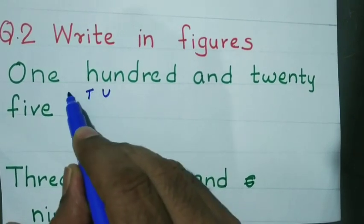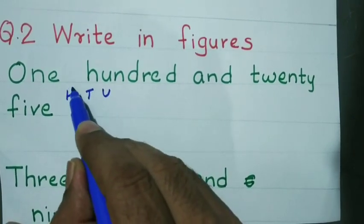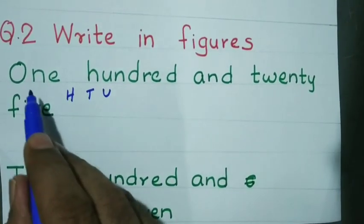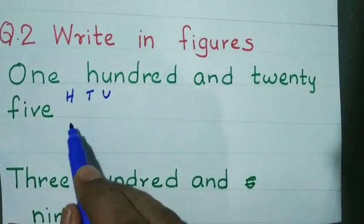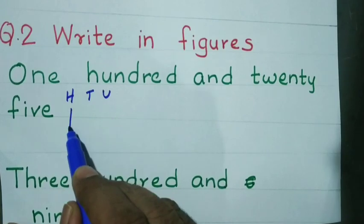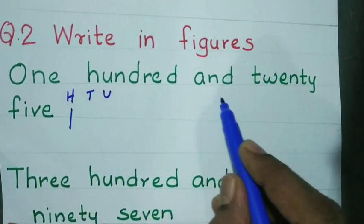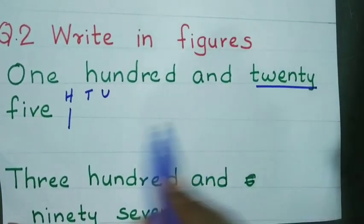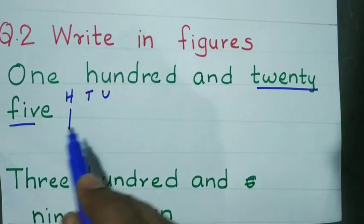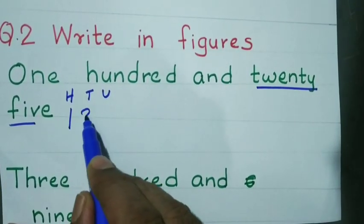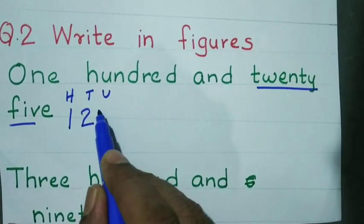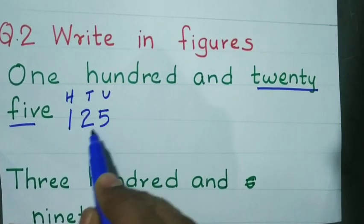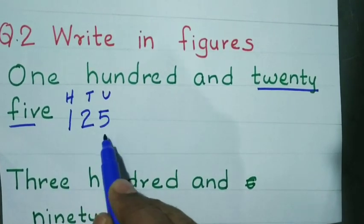Units, tens, hundreds. 1 hundred — write 1 first, and then 25. So, the number is 125.